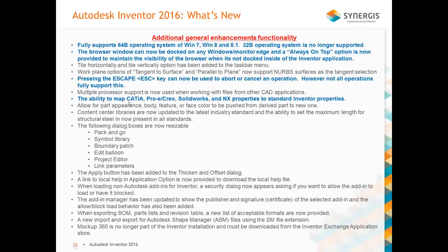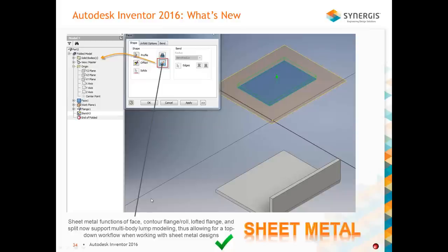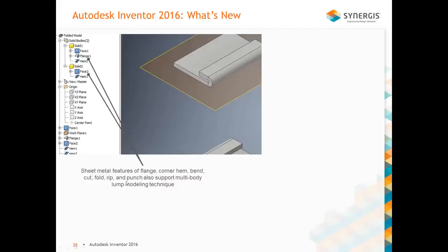Certain operations that may take a few minutes — you can now press the Escape key to abort the operation. Keep in mind that not all operations fully support this yet. For sheet metal, you now have the ability to create multi-body lump modeling — you can actually separate sheet metals and start a top-down workflow, which was not possible in the past. Flanges, corner hems, bends, folds, and grips also support the multi-body modeling technique. For face flange with control roll, you can now do a bend radius of zero.